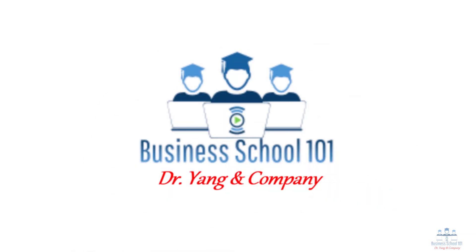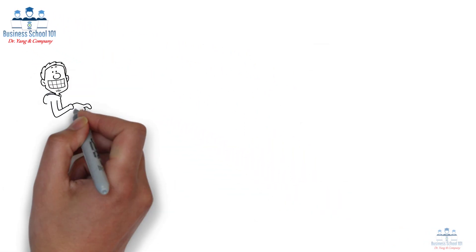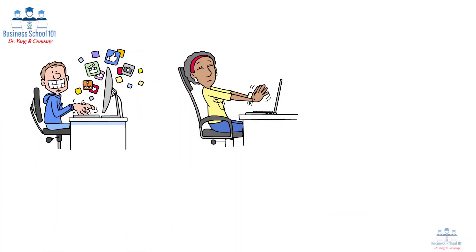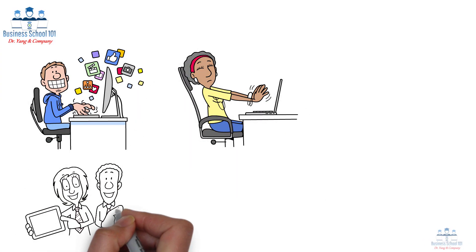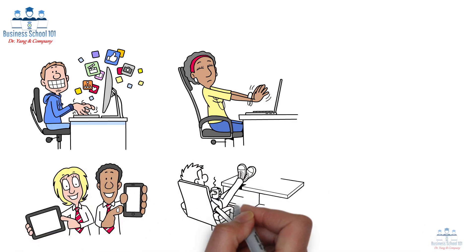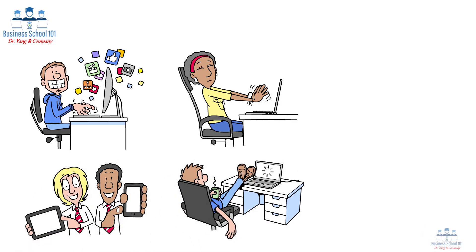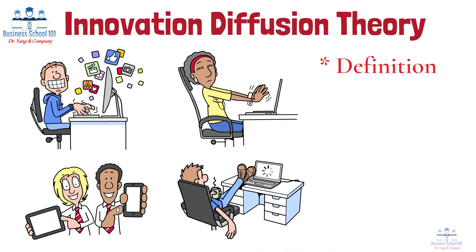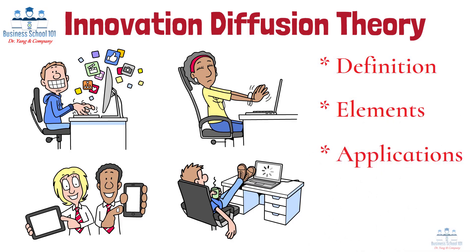Hello everyone, welcome to Business School 101. Have you ever wondered why some innovations spread rapidly while others struggle to catch on? Or why certain people adopt new products early while others wait for years? The answers to these questions are explained by a powerful framework called Innovation Diffusion Theory. In this video, I'll walk you through what it is, its main components, how it helps businesses, and real-world examples of it in action.